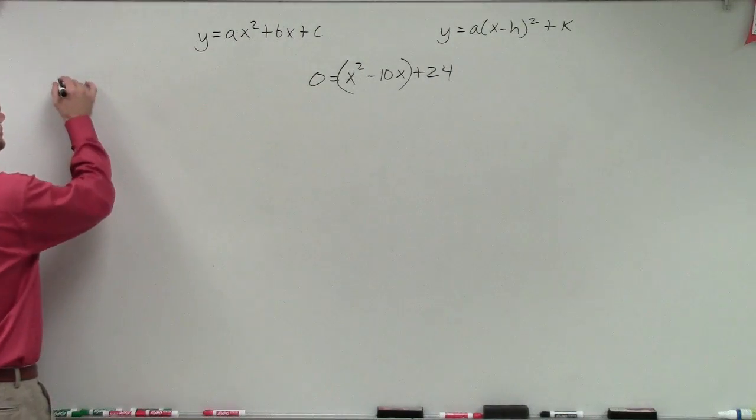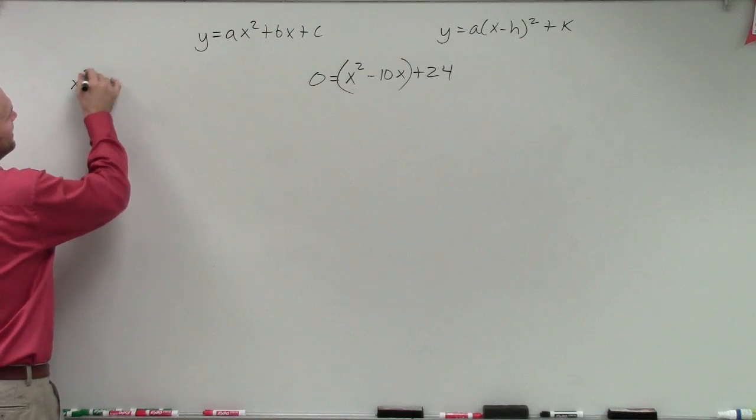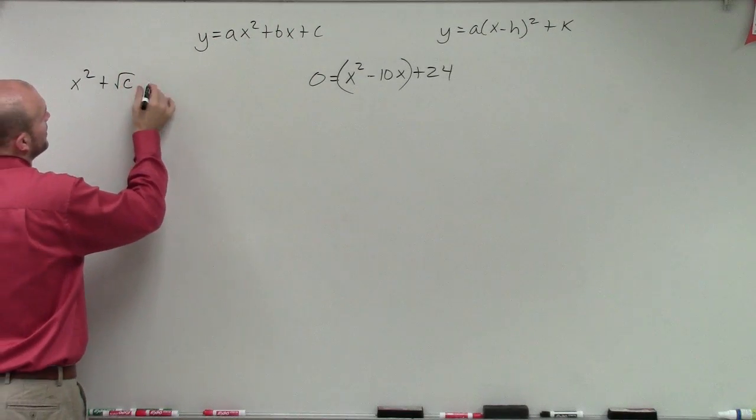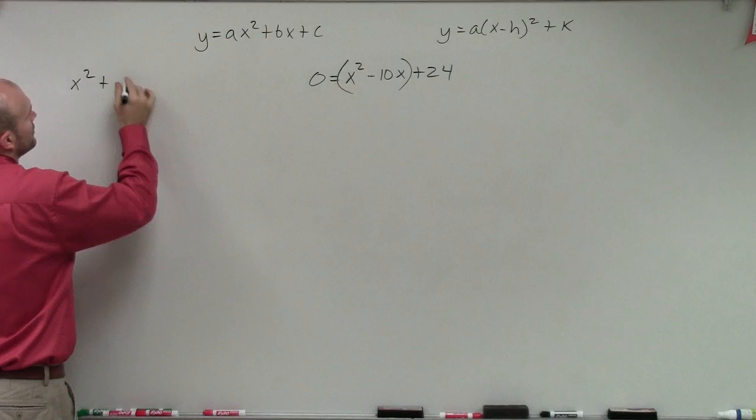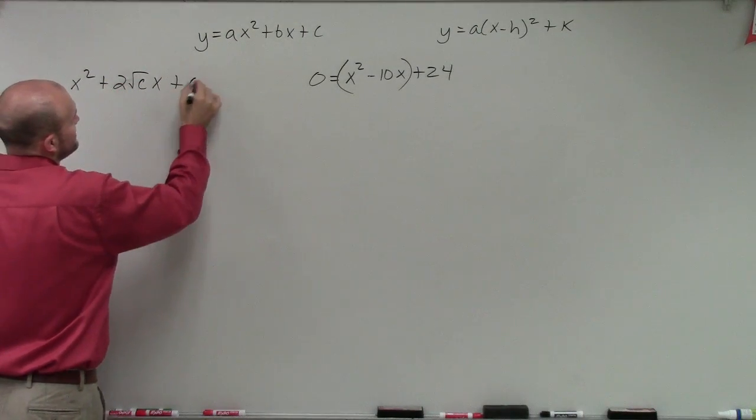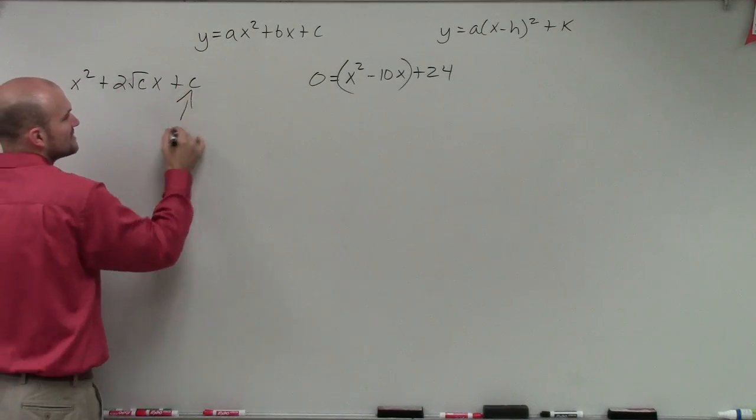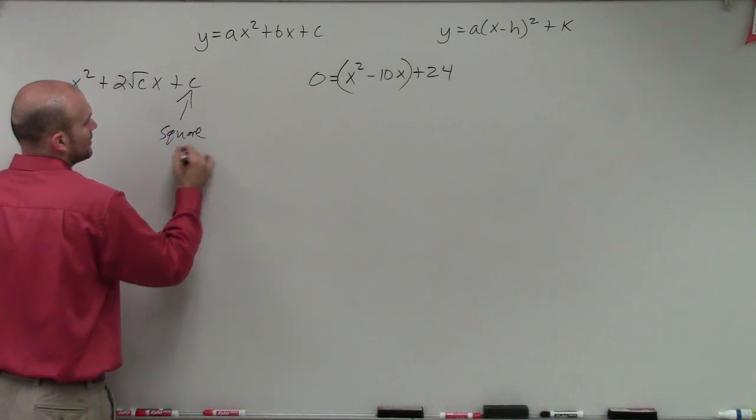And if you remember, a perfect square trinomial looks like this. x squared plus the square root of 2 times the square root of cx plus c, where c was a square number.